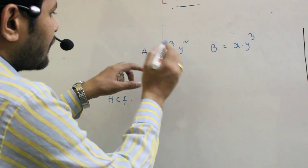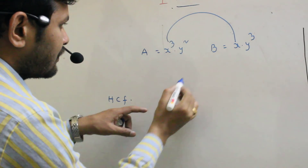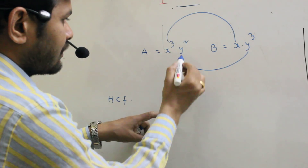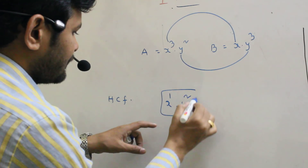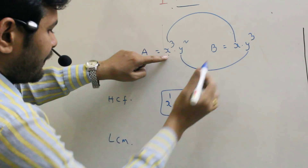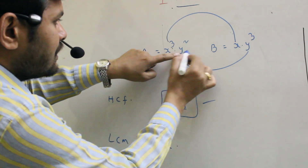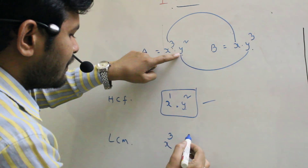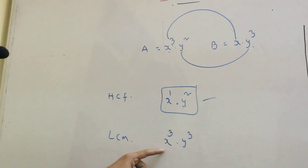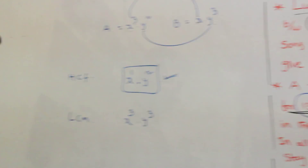What are the common factors? X is a common factor — the least power is 1. Y is a common factor — the least power is 2. So the HCF equals X times Y squared. For the LCM, take the highest power of X, which is 3, and the highest power of Y, which is 3. So the LCM equals X cubed times Y cubed. The HCF answer is X times Y squared.